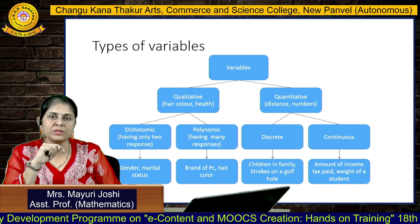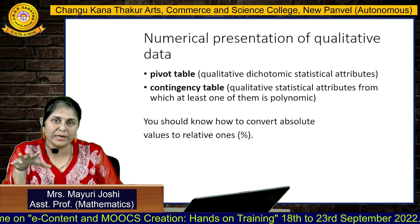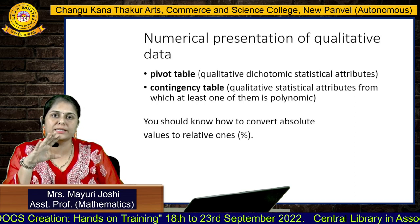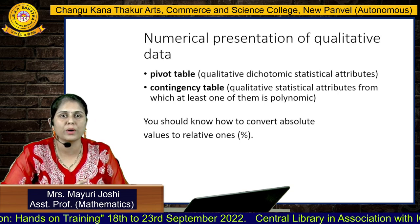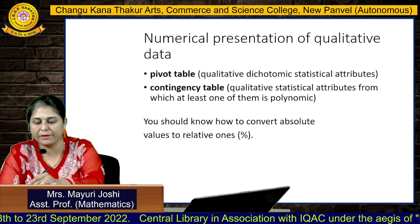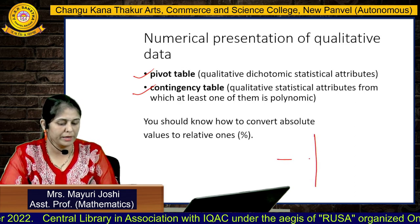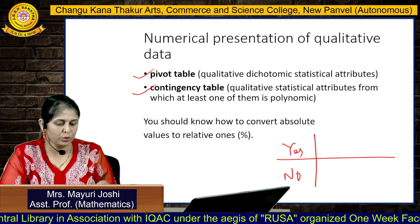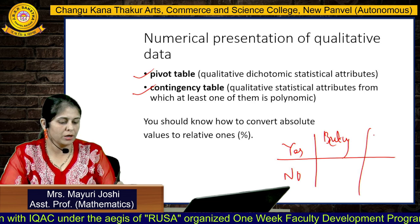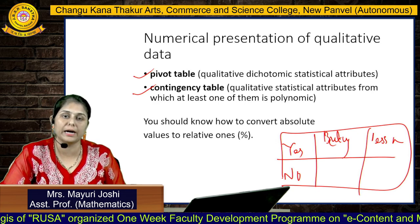These are examples where we can define the data. How do we present qualitative data? Qualitative data is attributable data — we don't have a number-like structure. Qualitative data can be presented using a pivot table and contingency table. A contingency table can be defined with responses like yes/no or categorical attributes.